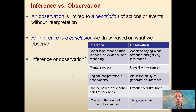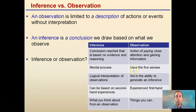Looking at an inference to start with, it's a conclusion reached based on evidence and reasoning. It involves a mental process, and it's a logical interpretation of observations. It can be based on secondhand experiences. What an inference really comes down to is what you think about from an observation. An observation is that description without interpretation — it involves paying close attention and gaining information, can use the five senses, aids in the ability to generate an inference, and can be experienced firsthand. No interpretation.